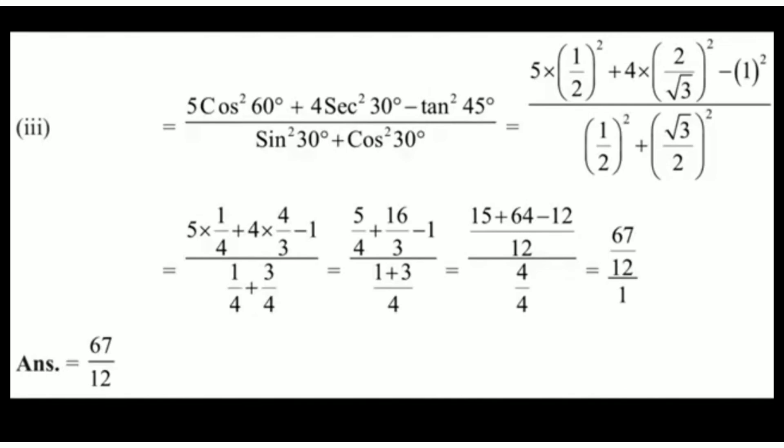Let us evaluate each term. 5 cos² 60°: the value of cos 60° is 1/2, so we square it to get (1/2)² and multiply by 5. Similarly, 4 sec² 30° = 4 × (2/√3)². And tan² 45° = (1)². In the denominator, sin² 30° = (1/2)² and cos² 30° = (√3/2)².